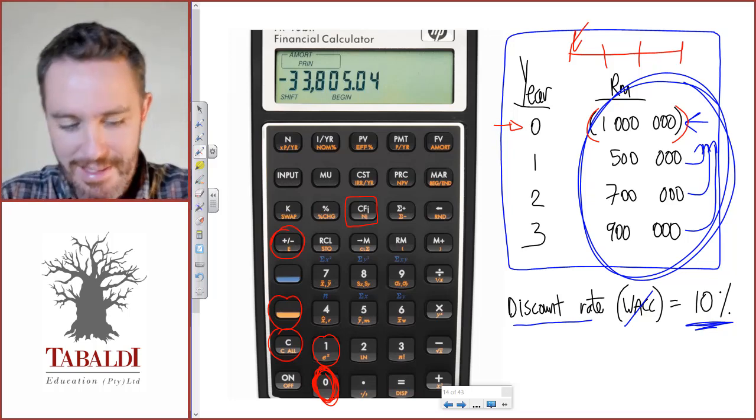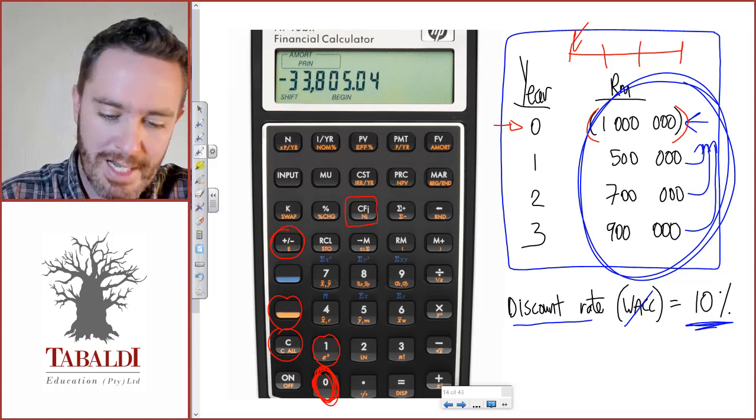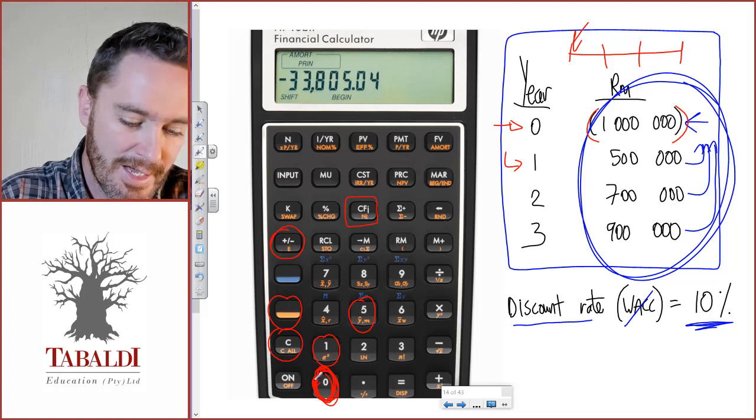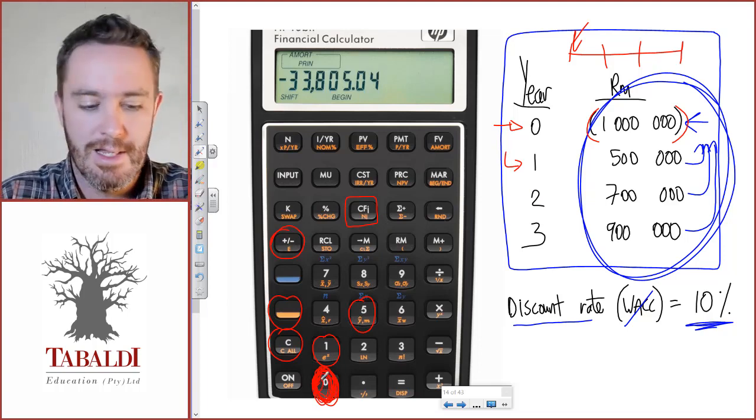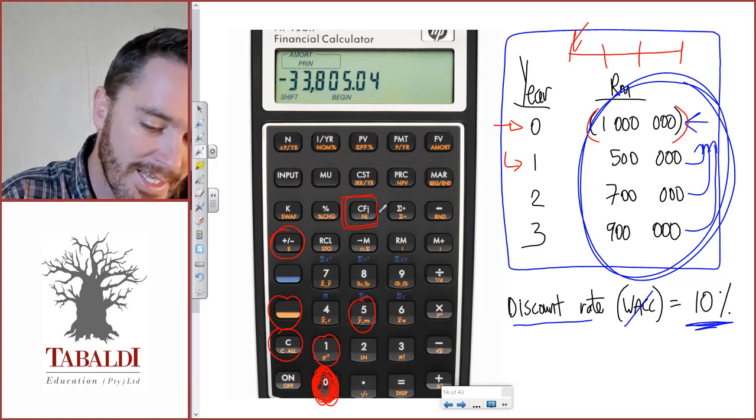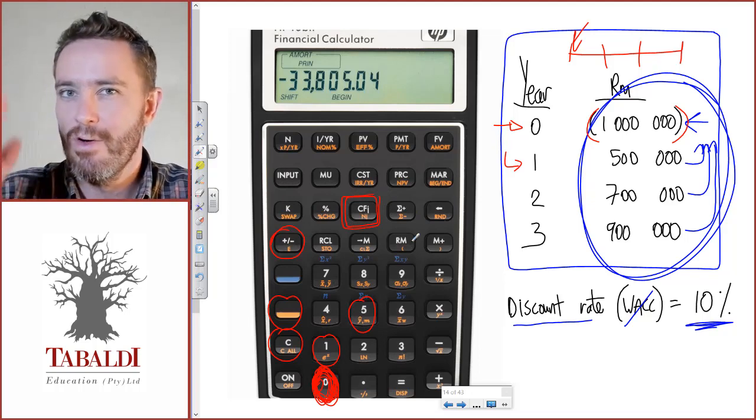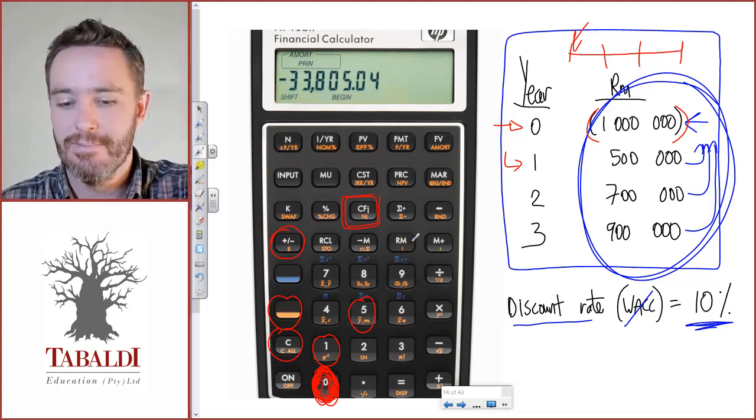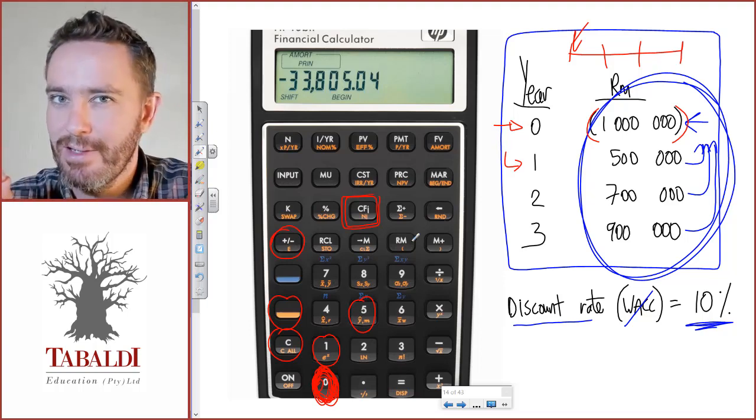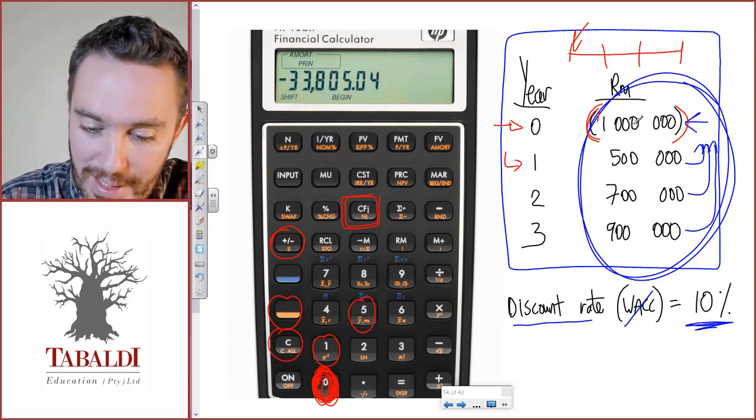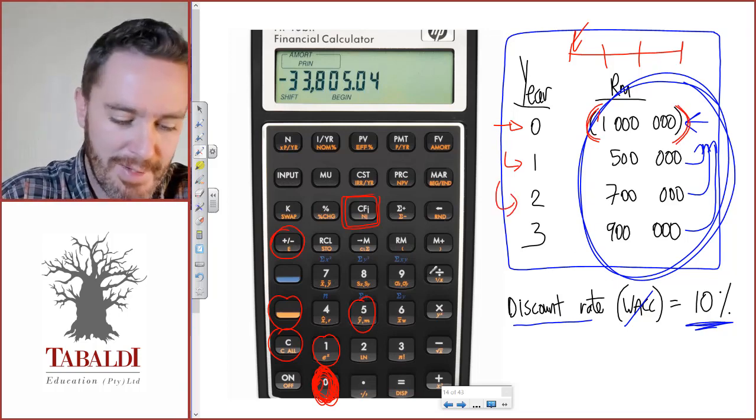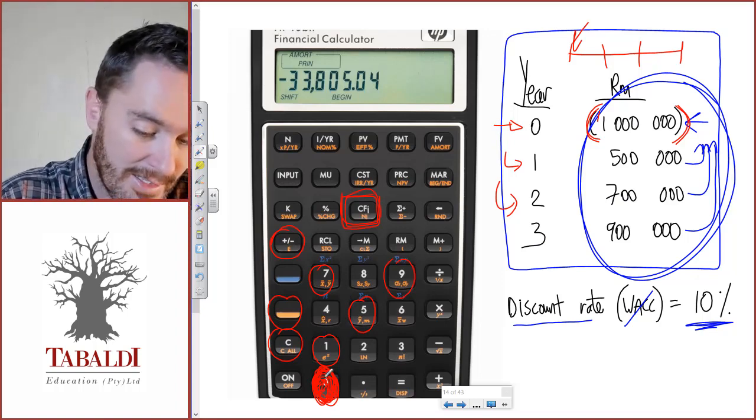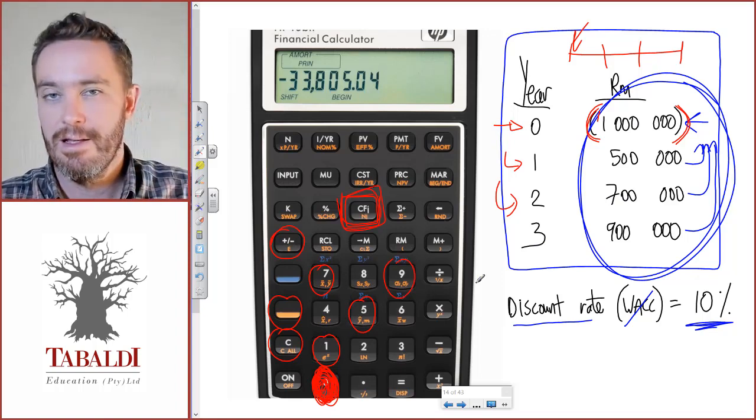Now we move on to the next cash flow. Type in 500,000, then immediately press the CFJ button. It'll pop up one CF for year one's cash flow. You have to remember about year zero and to make it a negative. Then we'll carry on: type 700,000, CFJ; 900,000, CFJ.